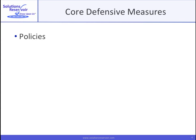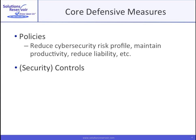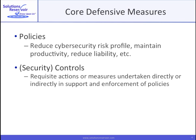Defensive measures stem from security policies and controls put in place. Among other things, policies have to strike a balance between security and productivity. Security controls are measures taken that ultimately support policies. Examples of simple controls are things like requirements to change your password every 60 days, or your computer locking up after five minutes of inactivity. Controls can be broad and sophisticated, and they are a major topic in Part 2.